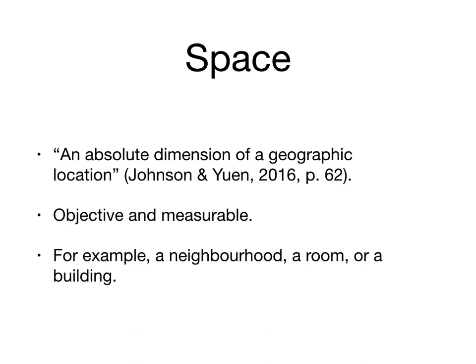First, we have the idea of space. When we say space, we're referring to the absolute dimension of a geographic or physical location. Spaces are objective and measurable. For example, the room you're in could be 10 feet by 11 feet with an eight-foot ceiling. The desk space you work at may be one meter by half a meter. Spaces can be big or small — large like a park or a neighborhood, or small like your desk space or a room in a building.